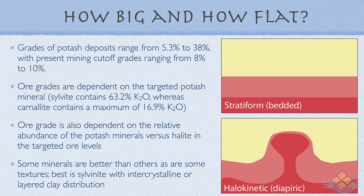In terms of ore grade, the range of K2O equivalent potash grades ranges from 5.3 to 38 percent. Typically, with modern mining, cutoff grades are between 8 and 10 percent, but this depends on economics - the price of potash, how much state subsidy there is in the potash mining, and so on. Ore grades are dependent on the mineralogy of the targeted potash mineral: for example, sylvite contains 63.2 percent K2O, whereas carnalite - which is a potassium chloride magnesium salt - contains around 16.9 percent K2O equivalent. Ore grades are also dependent on the level of contaminants such as halite and other salts in the horizon.